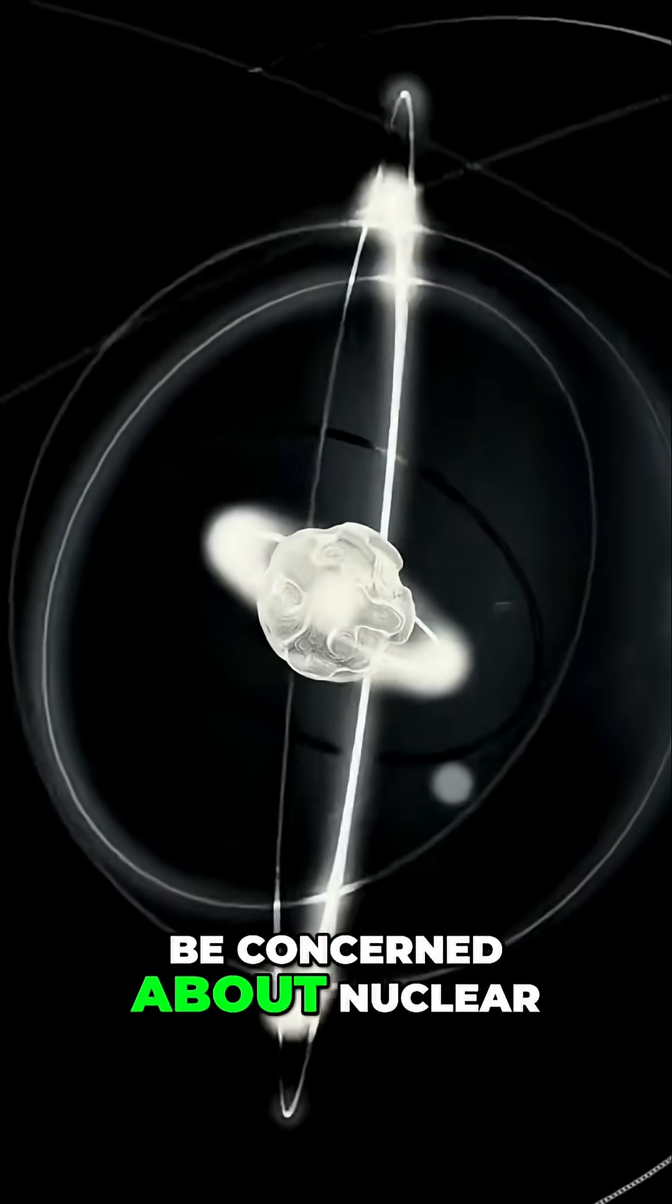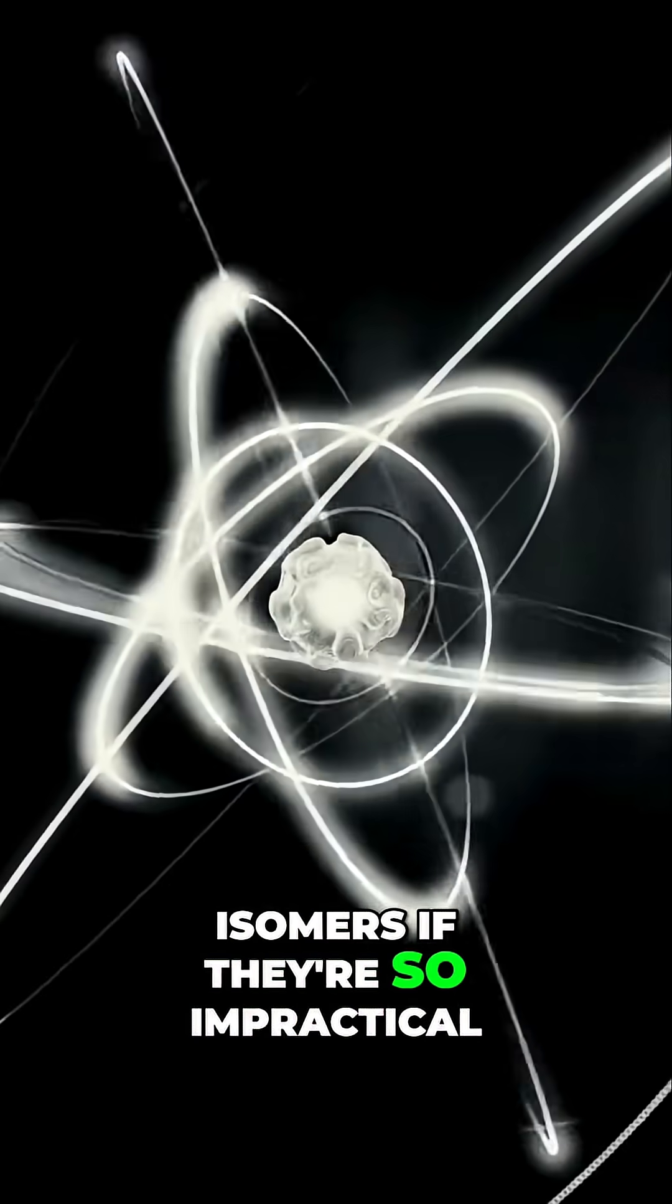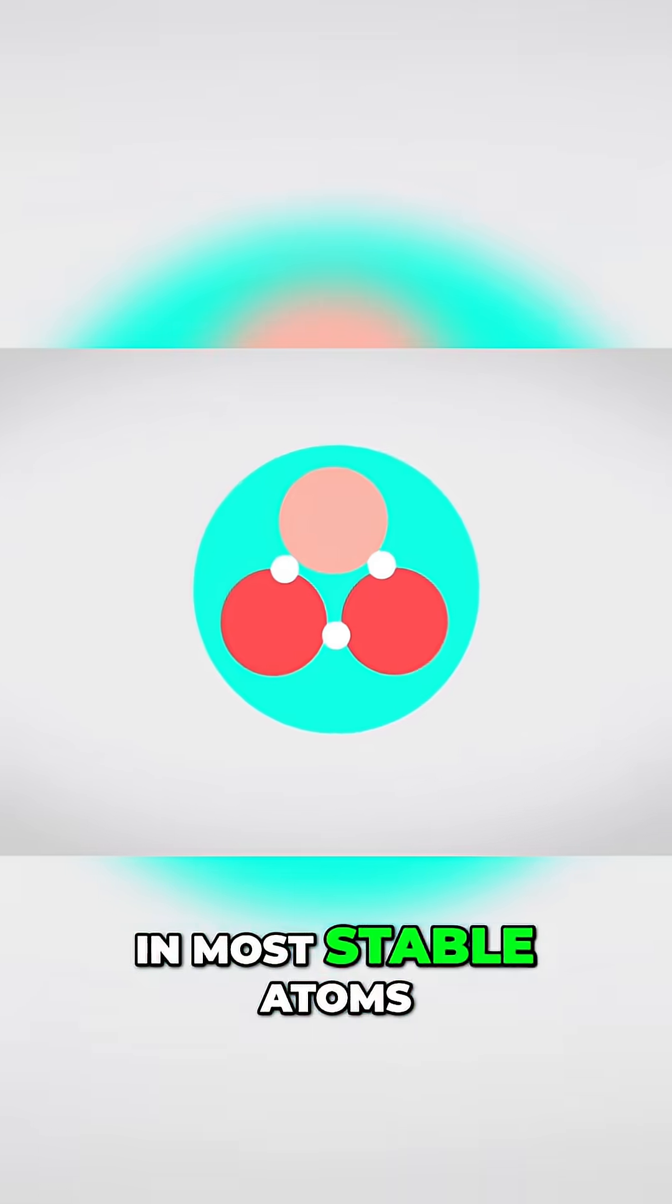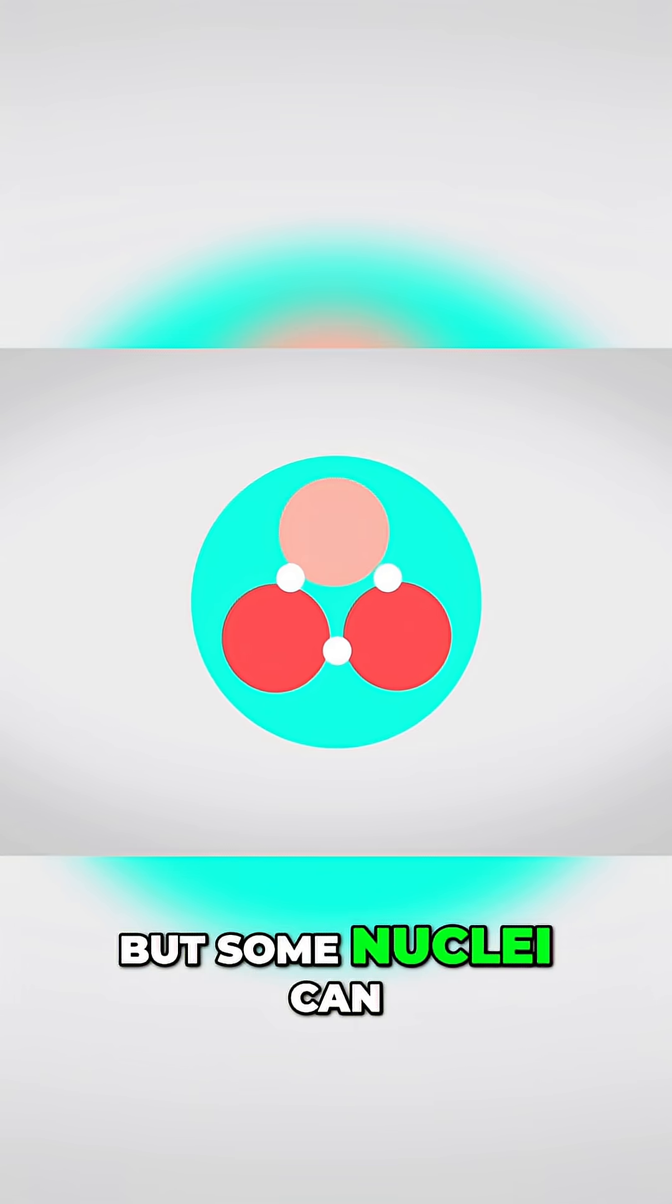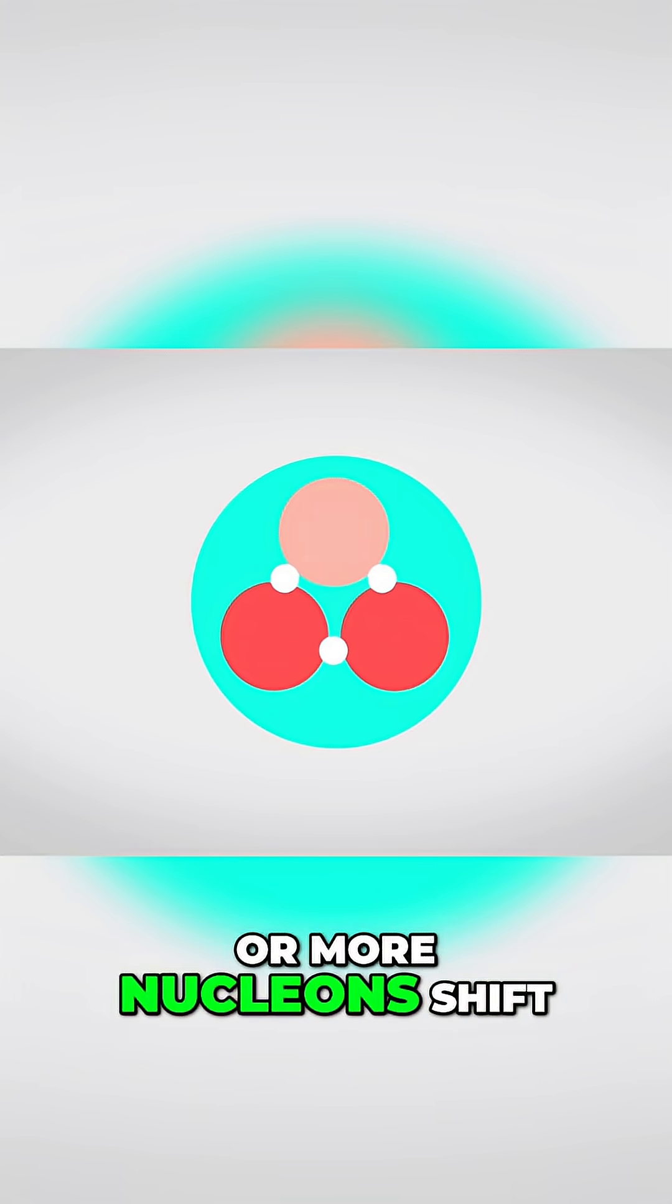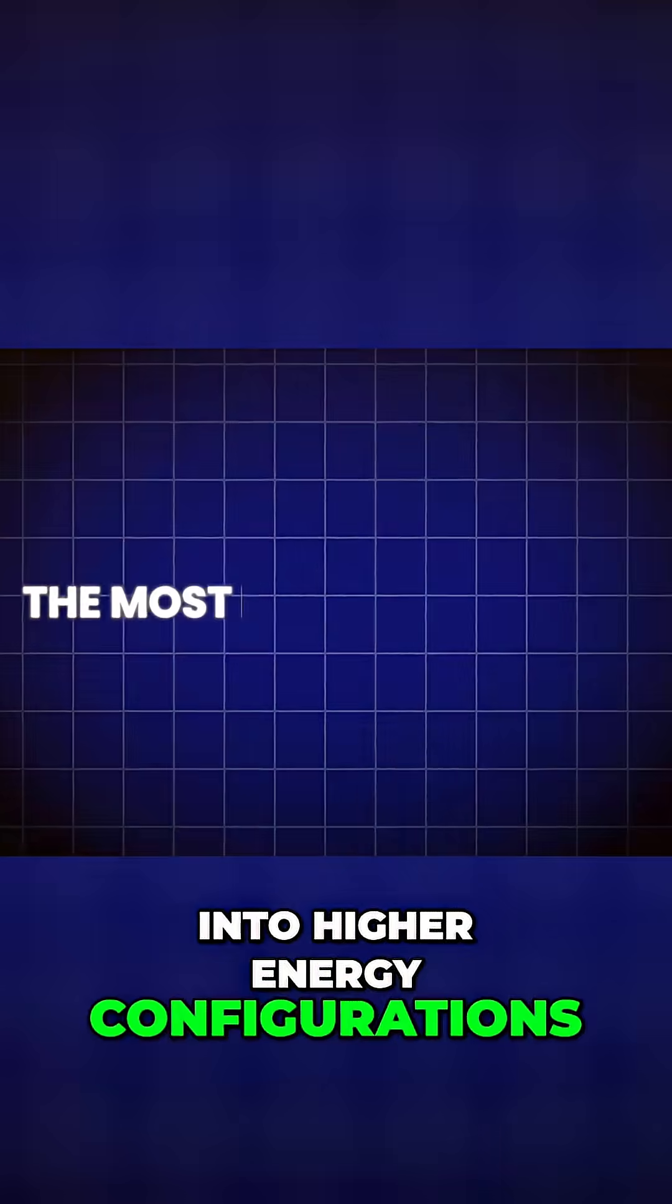So why should we be concerned about nuclear isomers if they're so impractical? In most stable atoms, nucleons, protons and neutrons pair up neatly. But some nuclei can get excited when one or more nucleons shift into higher energy configurations.